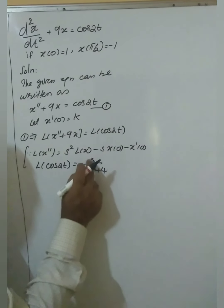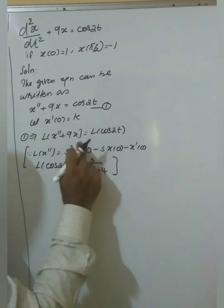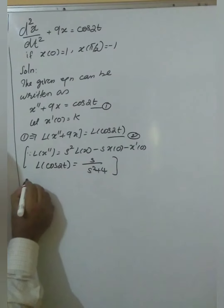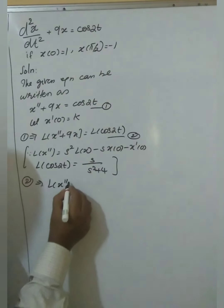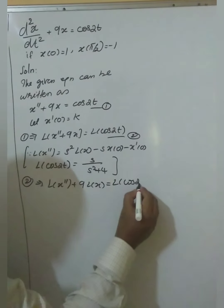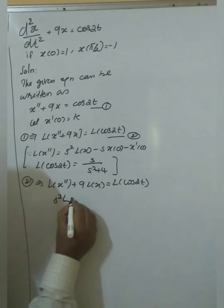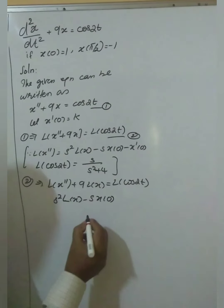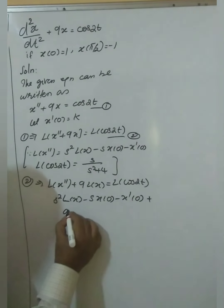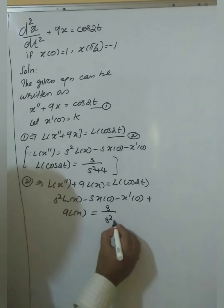So equation number 2: L(x'') plus 9·L(x) equals L(cos 2t), by linear property. That is s²·L(x) minus s·x(0) minus x'(0), plus 9·L(x) equals s over s² plus 4. Substituting the initial values: s²·L(x) minus s·1 minus k, plus 9·L(x) equals s over s² plus 4.